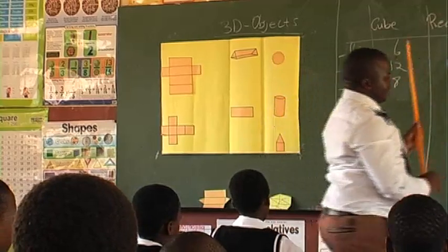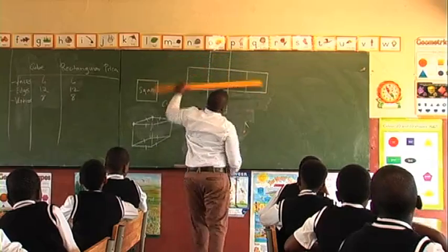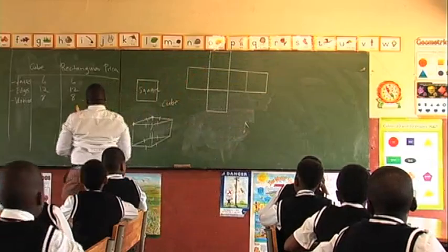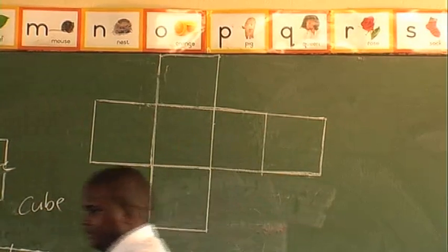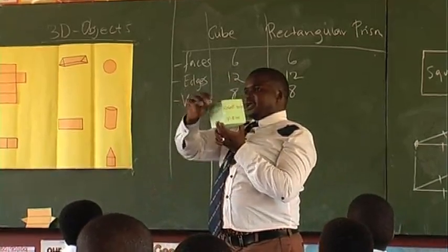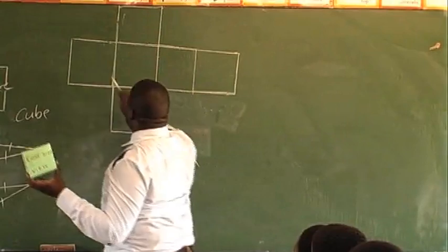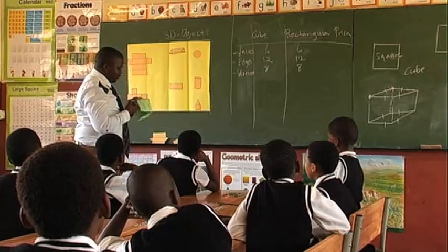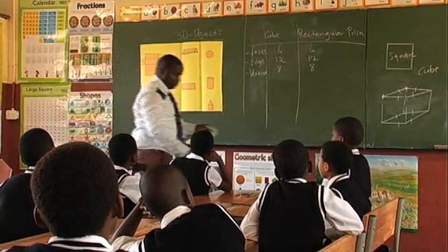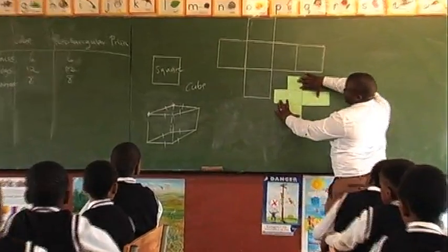Let us make the nets from this cube. This is the net of what? A cube. Now if you are assembling this net, it's supposed to give us a cube. How many edges are here? 12. And how many faces are here? Six. 1, 2, 3, 4, 5, 6. I'm cutting my cube down to make a net of a cube. This is the net of a cube.